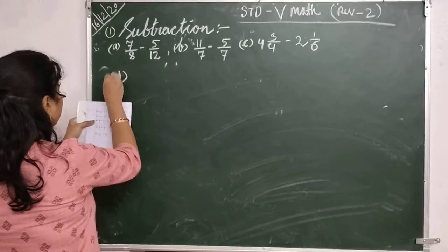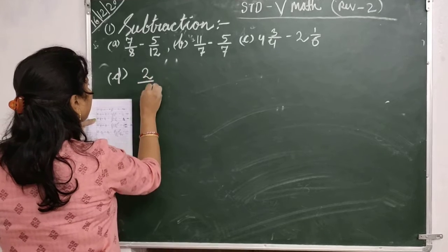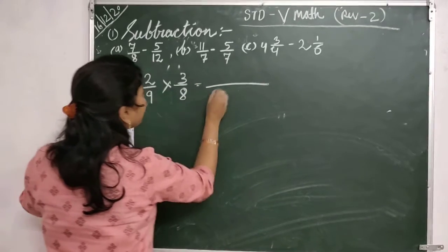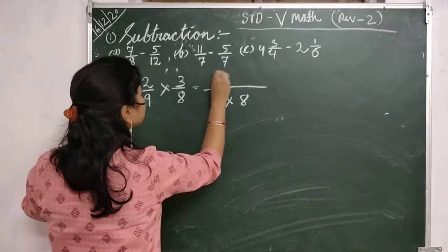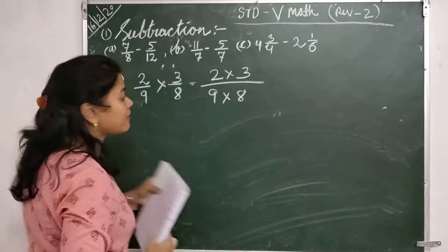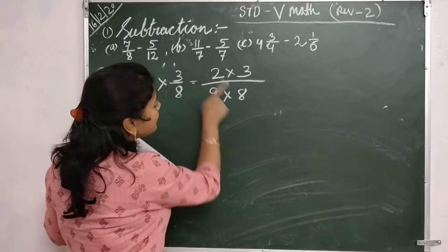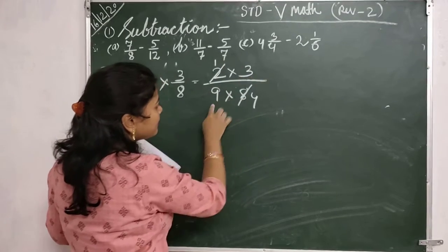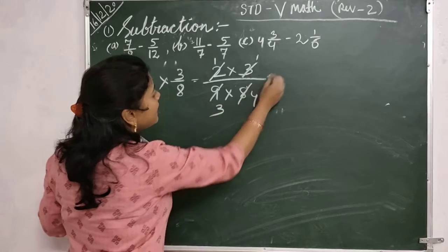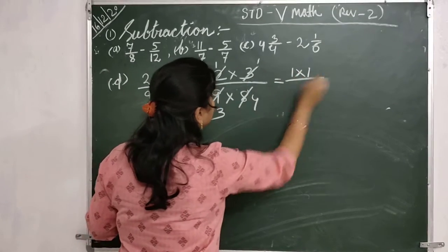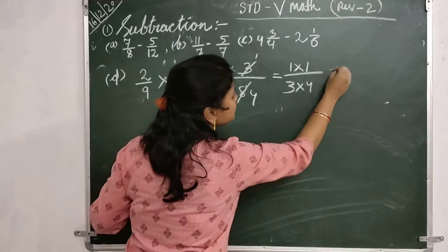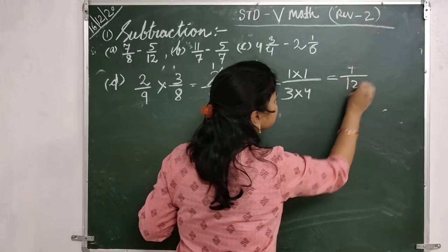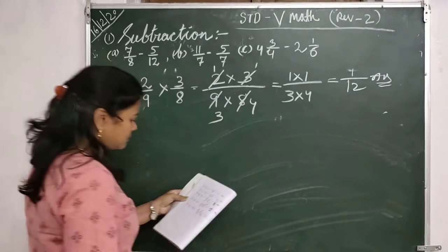Next, children, number D: 2 by 9 multiplied by 3 by 8. We have to multiply 9 with 8 and 2 with 3. Now simplify: here 2 and 8 — divide by 2, giving 1 and 4. Here 3 and 9 — 3 times 1 is 3, 3 times 3 is 9, so 1 and 3. Here 1 into 1, then 3 and 4. So your answer is 1 into 1 over 3 times 4, which is 1 by 12.